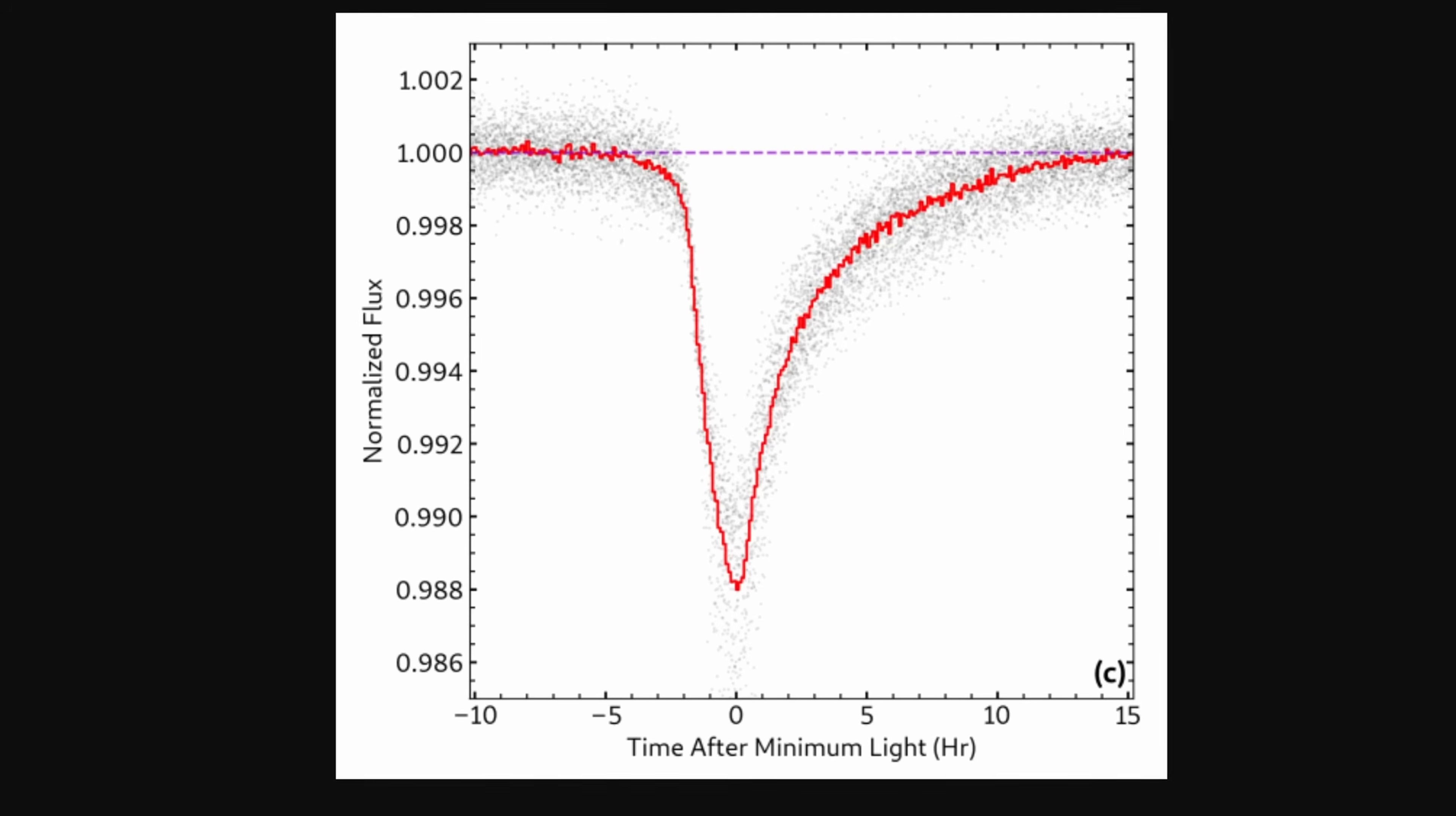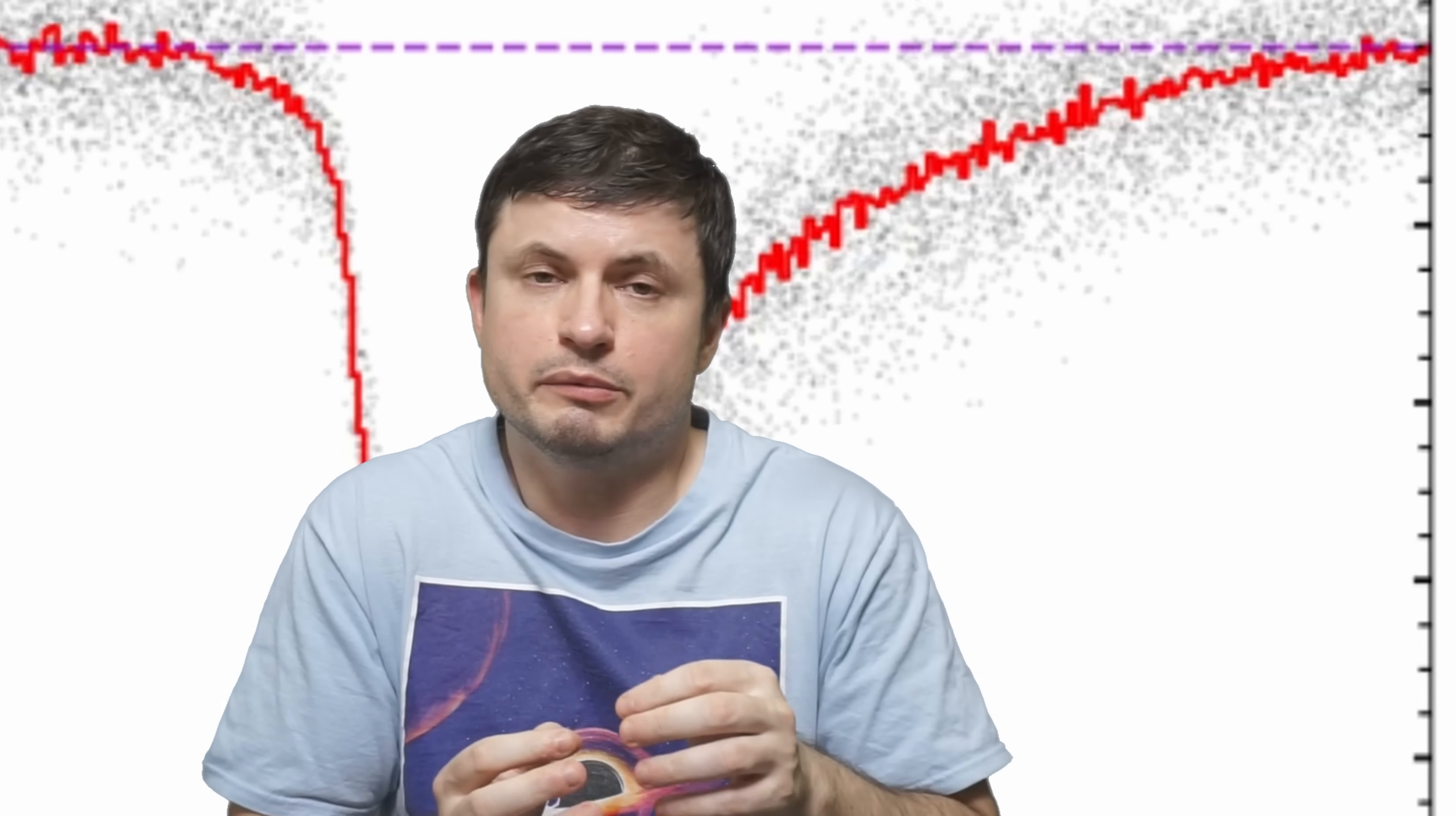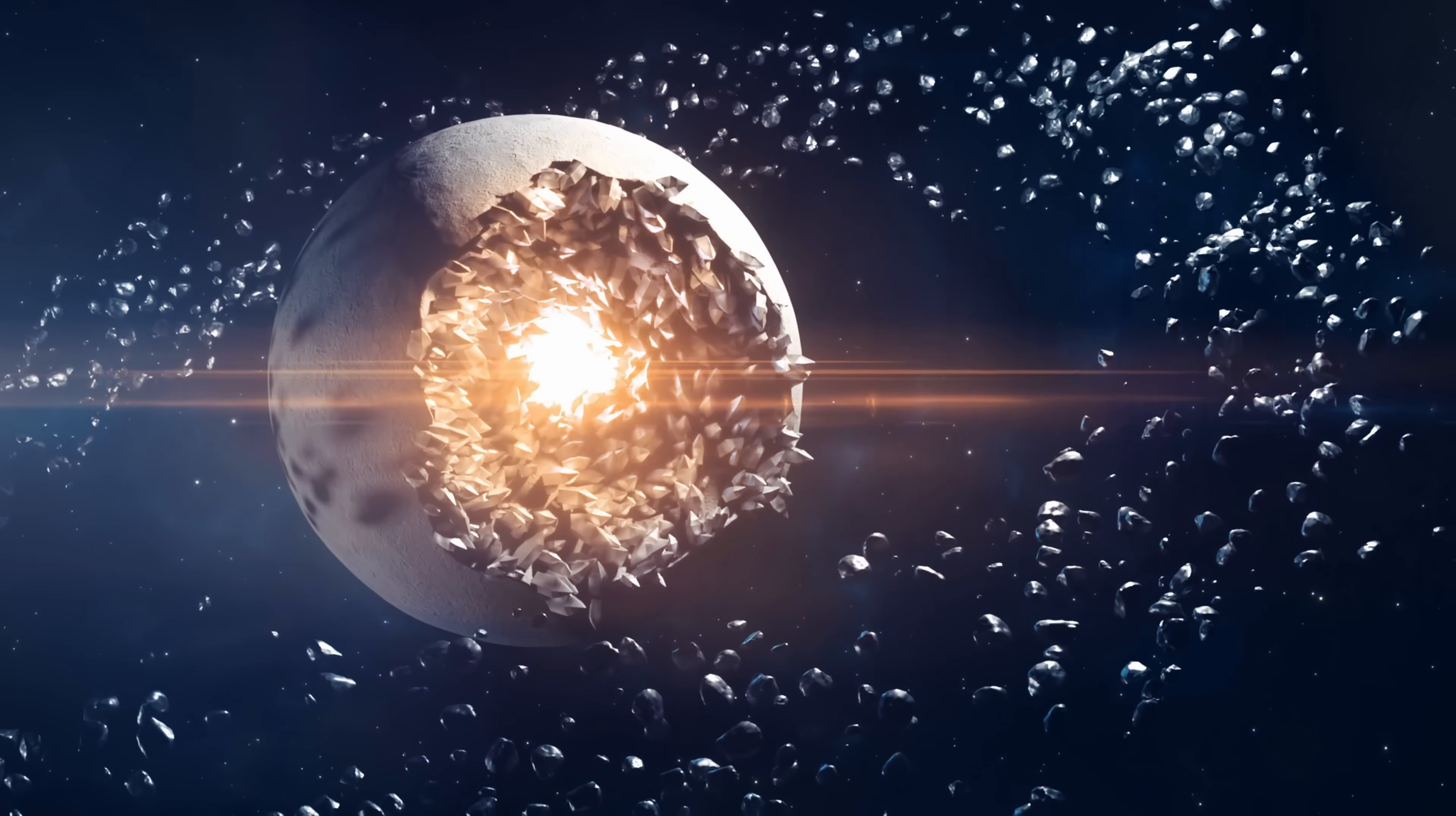Instead of being more or less equal on both sides, these dips usually have a somewhat long tail that can actually take several hours to complete, which in this case indicates that there's something else in the orbit of the planet, and that something is also blocking the star. And in this case, these residual observations were not always the same either. They actually fluctuated with every single orbit, which could only be explained if there was basically something coming from the planet, and it was always different with every single passage. And evaporating a planet could definitely explain this.